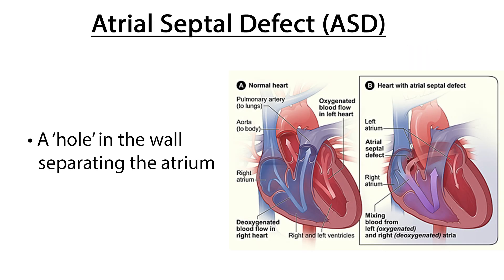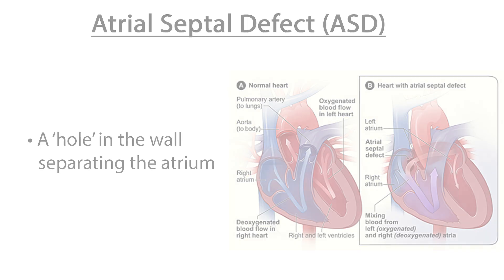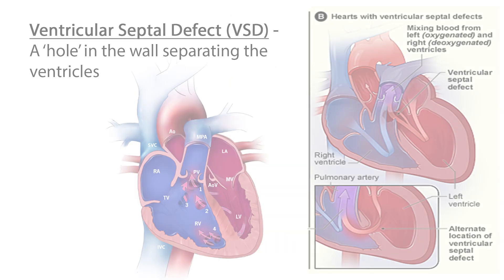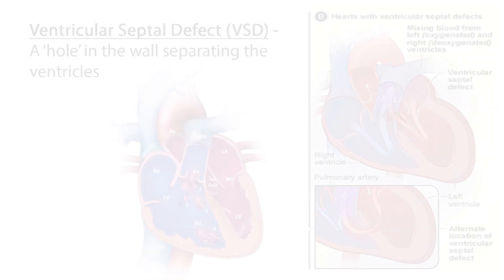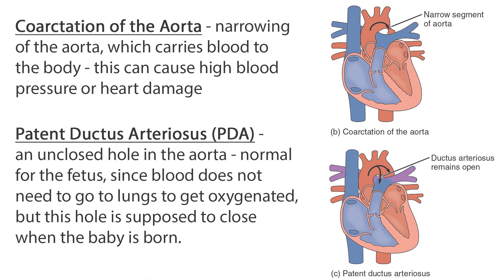Atrial septal defect, or ASD, is a hole in the wall separating the atria. Ventricular septal defect, or VSD, is a hole in the wall separating the ventricles. Coarctation of the aorta is a narrowing of the aorta, which carries blood to the body, and can cause high blood pressure or heart damage.